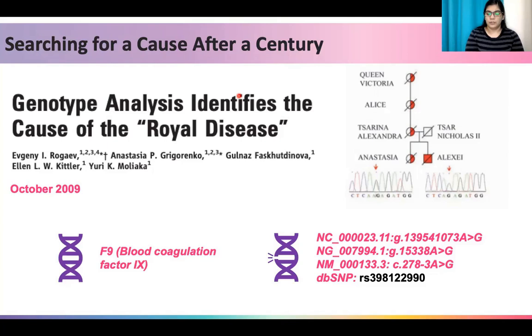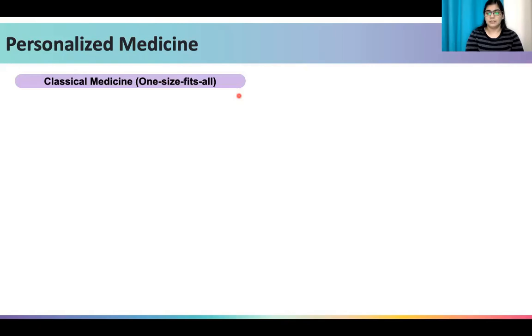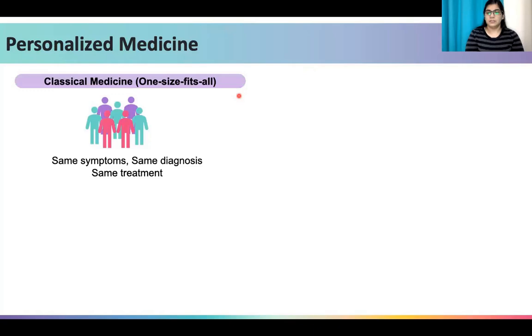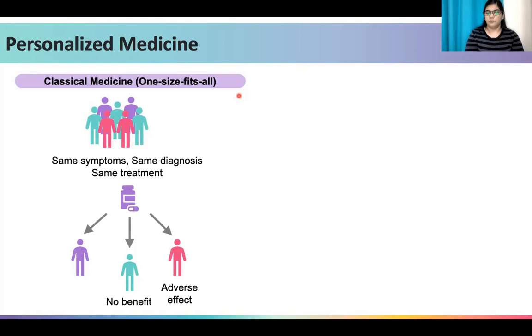This particular mutation was found in a heterozygous form for the female members that were sequenced, and all affected male members that they sequenced had the variant in a homozygous form, which led the researchers to conclude that this mutation probably caused Haemophilia B in the royal family. Thus, the advent of next generation sequencing can help us shift from the classical medicine approach of one size fits all.